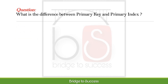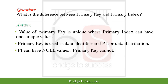What is the difference between primary key and primary index? The value of a primary key is unique, whereas a primary index can have non-unique values. Primary key is used as a data identifier and PI for data distribution. PI can have null values; primary key cannot.